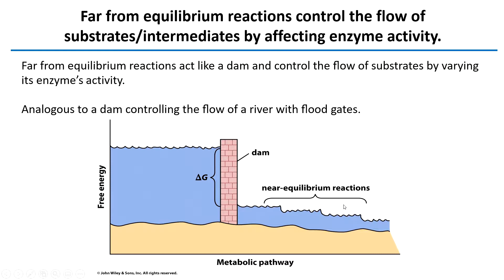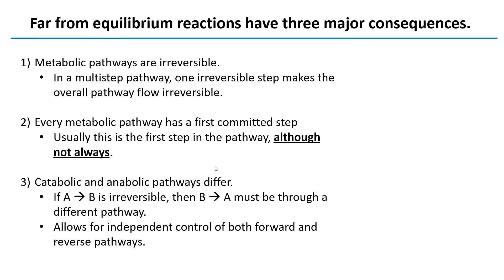While many reactions in the pathway may be near equilibrium and occurring at a constant rate, the enzymes that are far from equilibrium and constantly saturated with substrate are the ones that actually control the overall rate of the pathway — controlling what's called metabolic flux, or flow of metabolites through a pathway. Far from equilibrium reactions have three major consequences. First, these metabolic pathways are irreversible. In a multi-step pathway, one irreversible step makes the overall pathway flow irreversible. If you have three enzymes but the second one cannot catalyze the reverse reaction, you can't reverse the entire pathway.